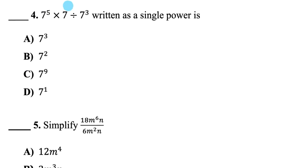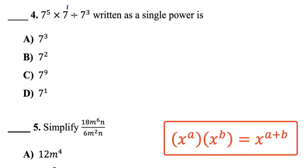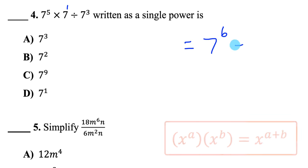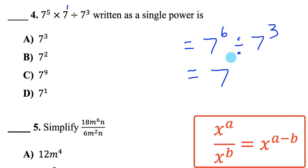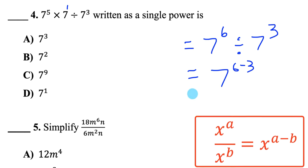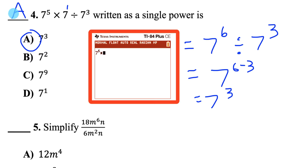Question 4: 7 to the power of 5 times 7 to the power of 1, divided by 7 to the power of 3, written as a single power. I combine the first two powers: multiplying with the same base, keep the base and add exponents — 5 plus 1 is 6. Then dividing by 7 to the 3: keep the base and subtract exponents — 6 minus 3 is 3, so 7 cubed. Easily verifiable by typing both expressions on your calculator.